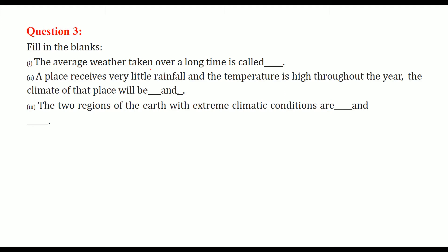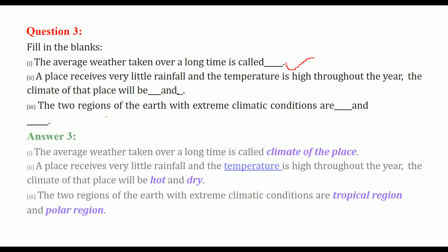The average weather taken over a long time is called climate. If a place receives very little rainfall and the temperature is high throughout the year, the climate of that place will be hot and dry, because it is not receiving much rainfall and temperature is also quite high.